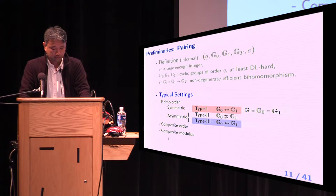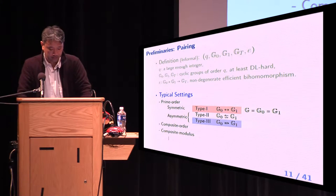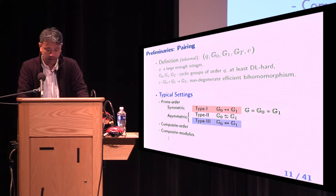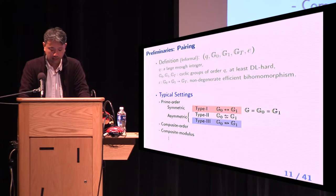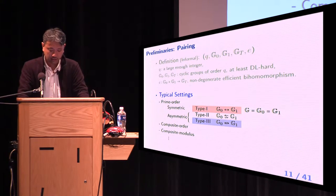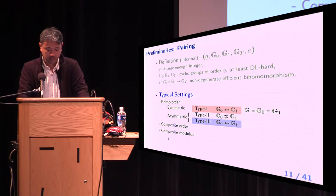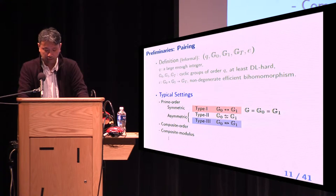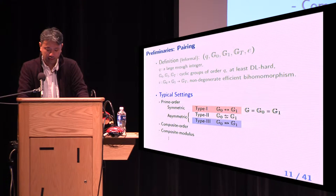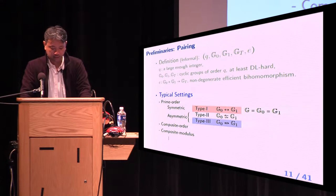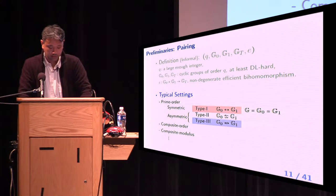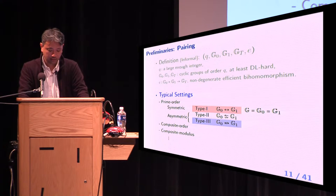Pairing has many typical settings, but we focus on prime order setting because it is the most popular one. The prime order setting is classified into three types by the existence of efficient homomorphism between G0 and G1. If there exists efficient homomorphism in both directions, we call such a setting type 1. In this case, we do not distinguish G0 and G1. Simply, we call them G. If there exists no efficient homomorphism between G0 and G1 in both directions, we call such a setting type 3. In this case, we must distinguish G0 and G1.